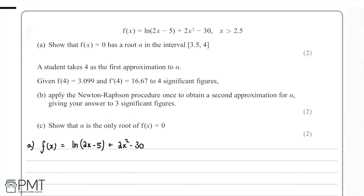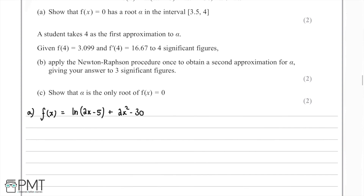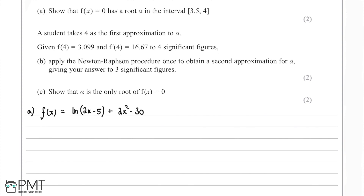Part a: we're asked to show that f(x) = 0 has a root α in the interval 3.5 to 4. We can do this by showing that there's a change in sign within the interval 3.5 and 4, which tells us there will be a root at f(x) = 0.